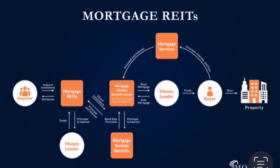Now I'm going to pull up a graph and explain the process of mortgage REITs. Mortgage REITs function much differently than an equity REIT — it's way more complex because instead of the company owning the property itself, they're providing loans to real estate owners. Starting with us as investors, there is an indirect investment going toward the mortgage REITs — principal and interest going down to the money lenders. After that, it becomes a direct investment going to mortgage-backed securities, and bond sale proceeds go to issuers such as Fannie Mae and Freddie Mac.